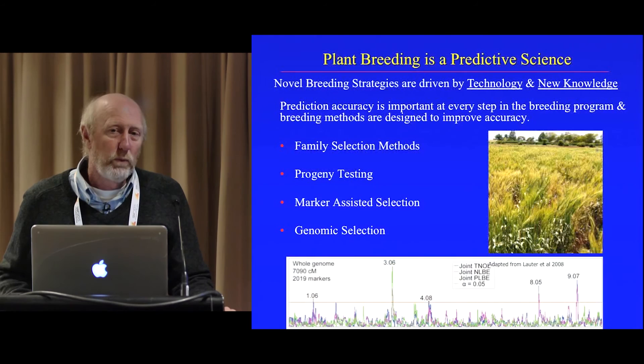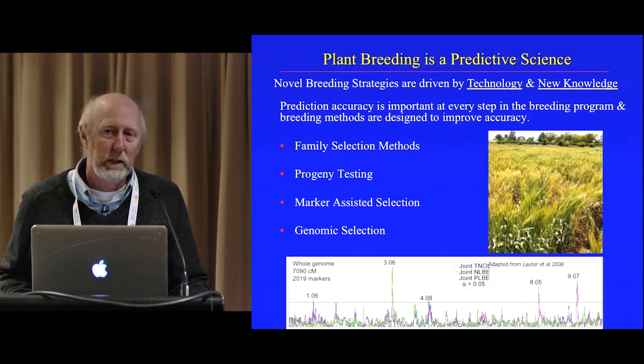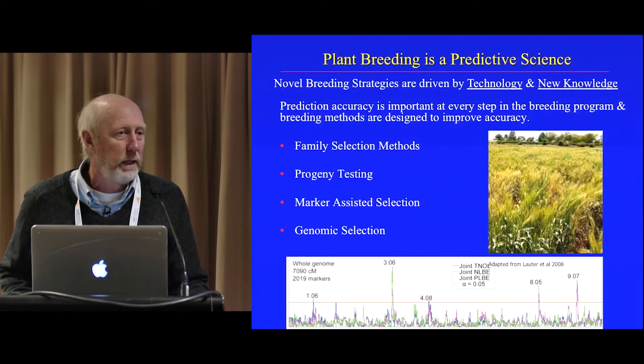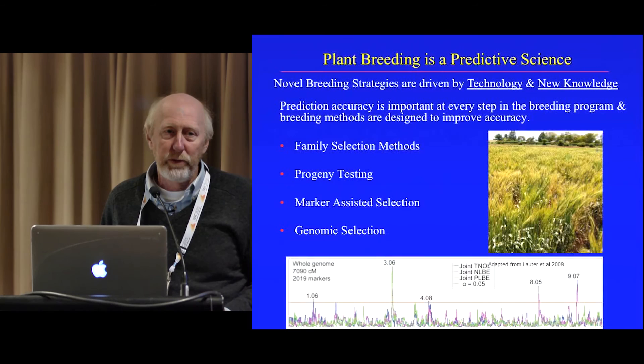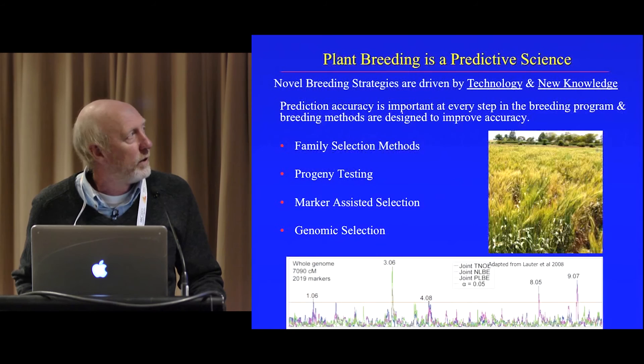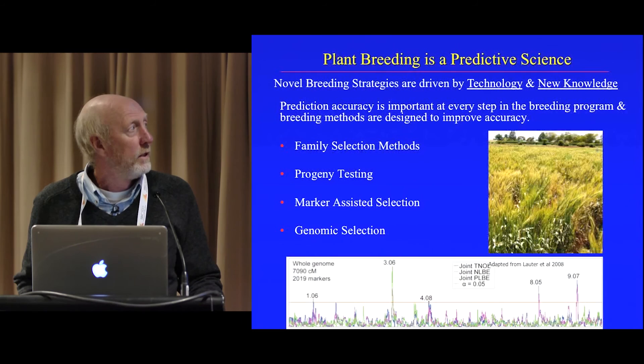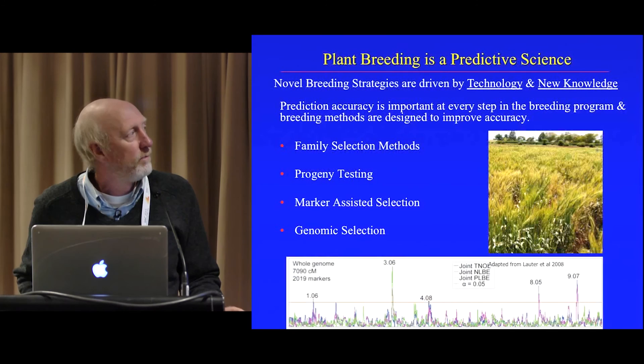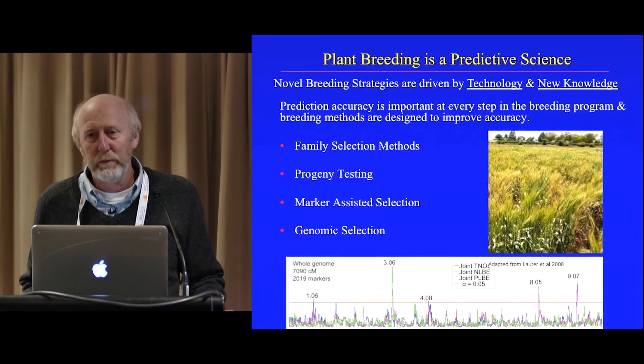When we're doing yield trials, we're trying to predict performance in a farmer's field. We're trying to use quality information to predict how these varieties are going to perform in a flour mill or in a baking shop. Over time, plant breeders have developed methods to improve their prediction accuracy and improve heritability. Some of those methods include family selection methods and progeny testing. More recently, with the introduction of molecular markers, we are taking advantage of that new tool to improve our selection for both qualitative and quantitative traits.